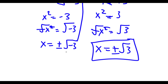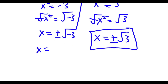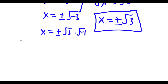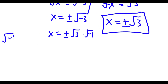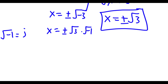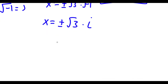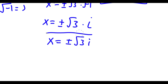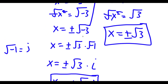The square root of negative 3 can actually be simplified. The square root of negative 3 is the same thing as the square root of 3 times the square root of negative 1. And the square root of negative 1 is actually equal to the imaginary number i. So if I replace the square root of negative 1 with i, I get x is equal to plus or minus the square root of 3 times i, which gives two more solutions.